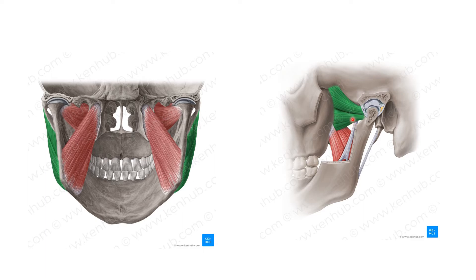The fibers of the two heads converge to form a thick tendon inserted into the pterygoid fovea on the front of the neck of the mandible, and into the articular disc and capsule of the temporomandibular joint. It is supplied by a branch from the anterior division of the mandibular nerve. The lateral pterygoid acts as a depressor of the mandible, while the medial pterygoid acts as an elevator, helping close the mouth, with both involved in protrusion and side-to-side movement.